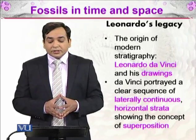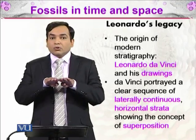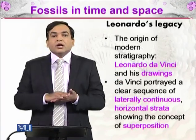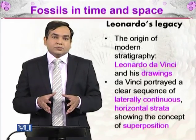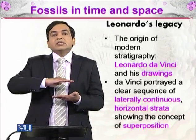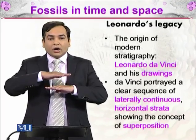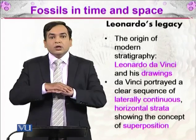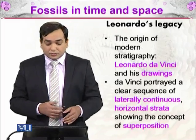Da Vinci portrayed a clear sequence of laterally continuous horizontal strata — laterally continuous means extending toward the lateral side, and horizontal strata means horizontal layers, not vertical. These layers show the concept of superposition, meaning one layer placed upon another, just as one book placed on top of another, or one hand superimposed on the other. He gave us the foundational idea of superposition.